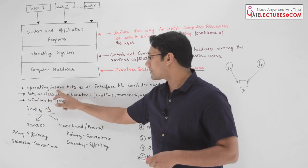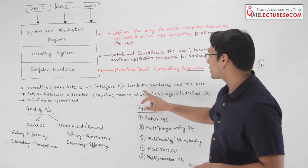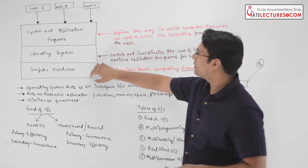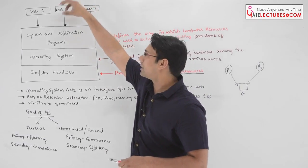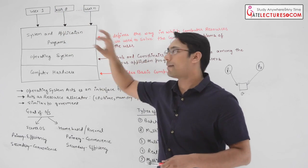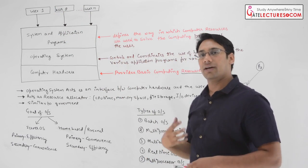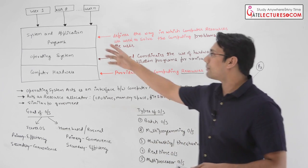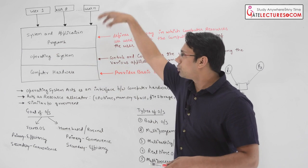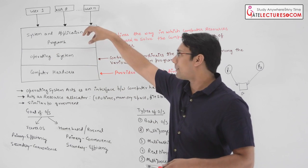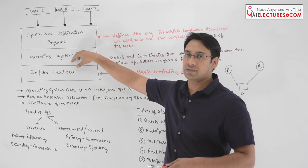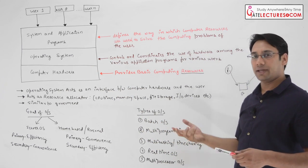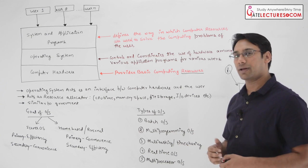The operating system acts as an interface between the computer hardware and the user. The application program represents the user side. Multiple users work on application programs such as MS Word, PowerPoint, and MS SQL. These application programs communicate with the operating system through an interface — most commonly using APIs, or application programming interfaces.